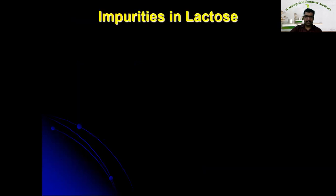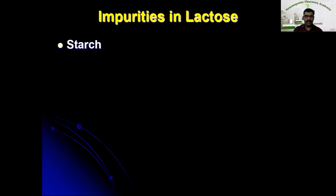Now let us see the impurities in lactose and how to identify them. The first impurity is starch. Starch is much cheaper than lactose so it can be added as an adulterant, which increases the bulk or weight of the lactose. Iodine solution is the reagent used to identify starch — when you add iodine solution to lactose, if starch is present, it turns blue in color.